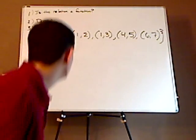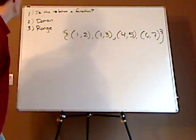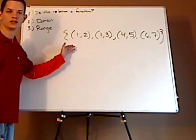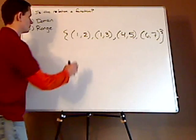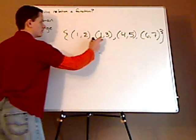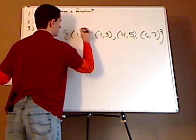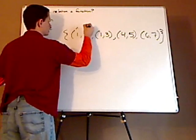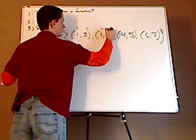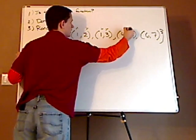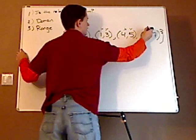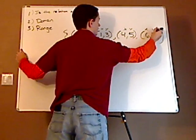So what we have is a relationship — a relation — and it's a series of points: X, Y pairs.